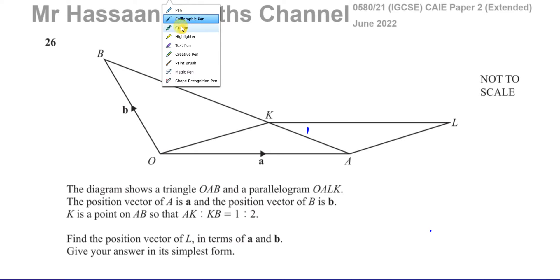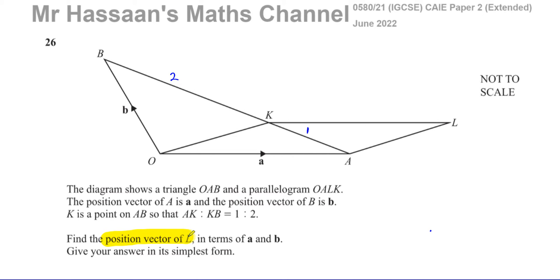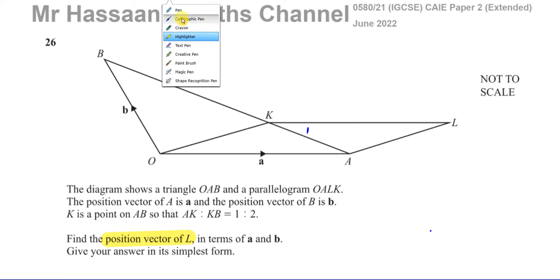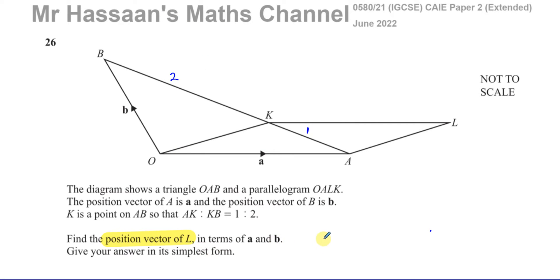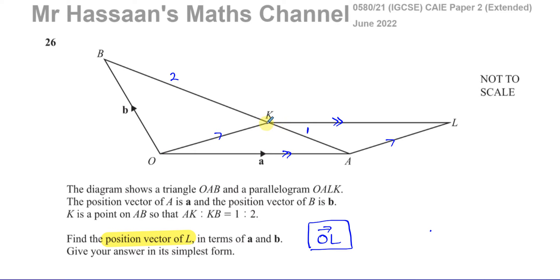We need to find the position vector of L in terms of A and B, giving the answer in its simplest form. The position vector of a point always refers to the vector from O to that point, so our objective is to find the vector from O to L. Since OALK is a parallelogram, opposite sides are parallel and equal in length, so the vector K to L is also equal to vector A.